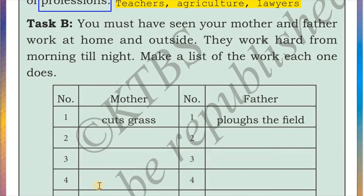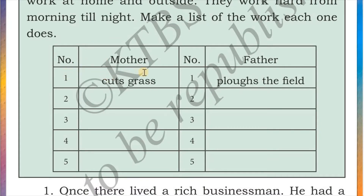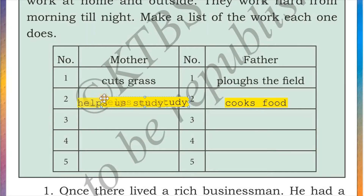The second task is Task B. You must have seen your mother and father work at home and outside — they work hard from morning till night. Make a list of the work each one does. Two examples are given: mother cuts grass, father plows the field. You can add to this list by observing your parents. For example, if your father cooks, add 'cooks food'; if your mother helps you study, add 'helps us study.'